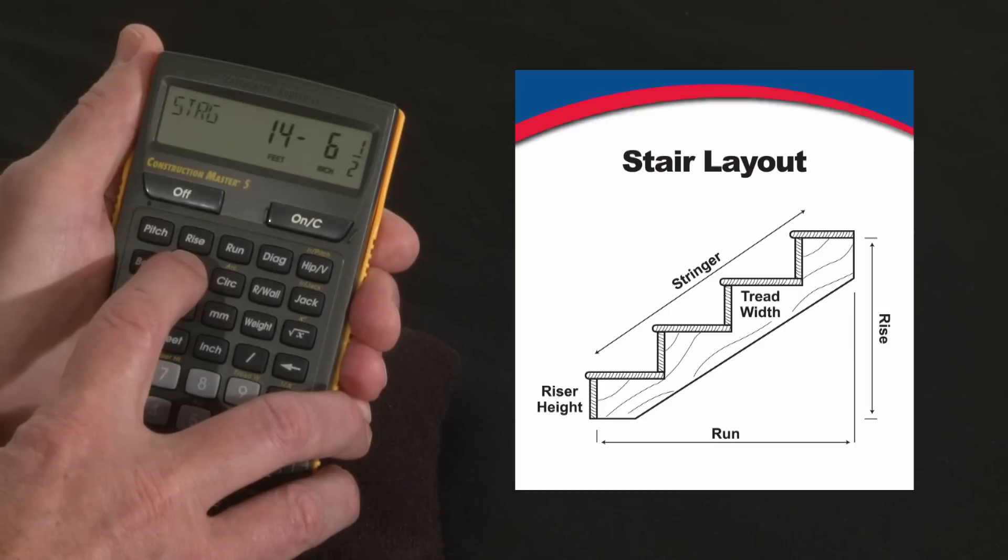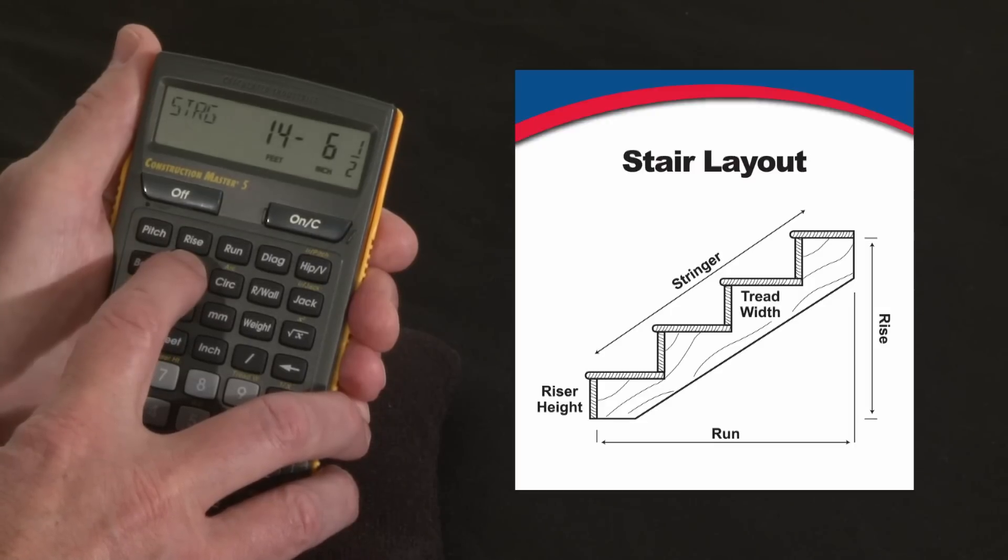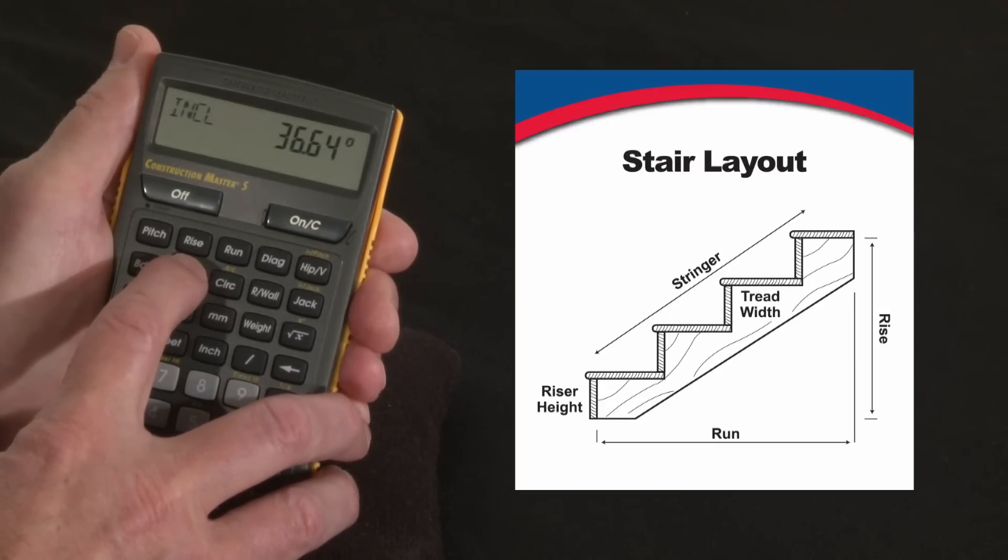The stringer length is going to be fourteen feet six and a half inches. And the angle of incline is thirty six point six four degrees. The total run of this stairway is eleven foot eight.